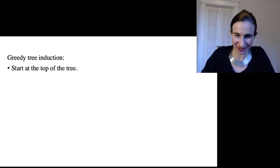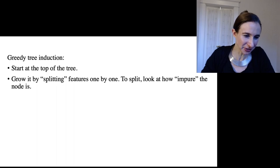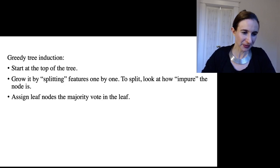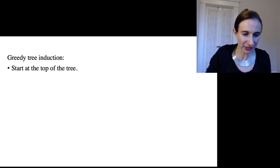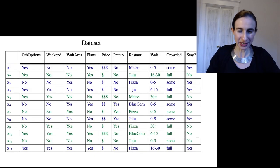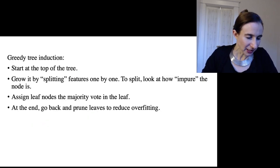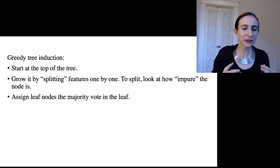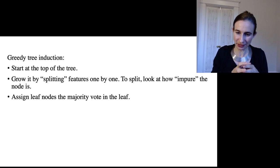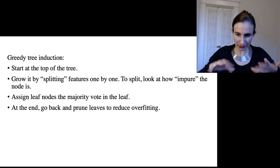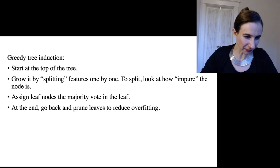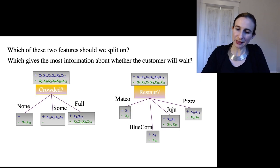So you get the idea—that's what we're trying to construct. We'll do this greedy tree induction where you start at the top of the tree and you grow it by splitting the features one by one. To split we're going to look at how impure the node is with respect to the label—oh and the label I forgot to tell you is whether or not the customer will stay at the restaurant, which is the right column there. And then in the end we assign the leaf nodes the majority vote in the leaf. You take all the data that fell into the leaf and assign the majority vote, and then at the end we're going to go back and prune the tree to prevent overfitting.